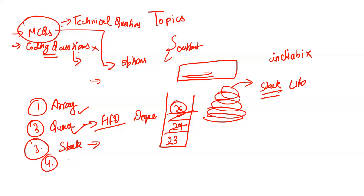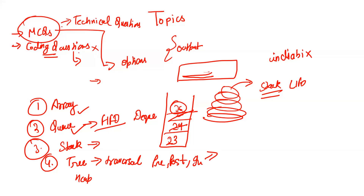Tree is a very favorite topic of TCS. They usually ask basic questions from Binary Tree, Complete Binary Tree, and Heap. Traversals are important — pre-order, post-order, and in-order. A tree may be given and you have to determine the correct traversal. Always remember: for a Binary Search Tree, in-order traversal will always give a sorted result. Questions like 'what sort of tree is a Heap?' may appear — options like Complete Binary Tree and Max/Min Heap properties should be clear in your mind.